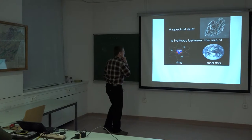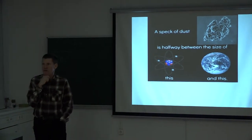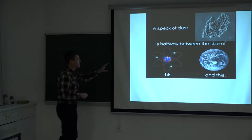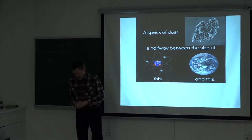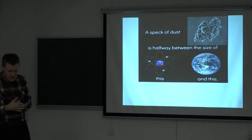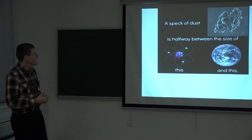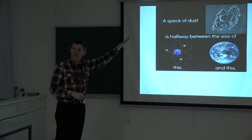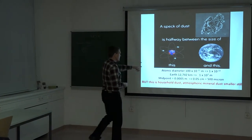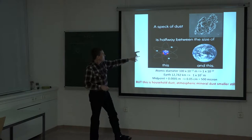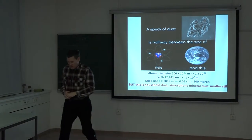So what exactly do we mean by a speck of dust? Dust to some people — dust to your mother — is probably very different to what we're going to talk about today. I saw this graphic saying a speck of dust is halfway between an atom and the Earth, and the scientist in me wanted to prove it. So, atomic diameter to the Earth — halfway between that is about 500 microns, and that is close enough for a speck of household dust.